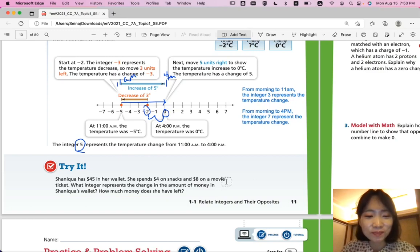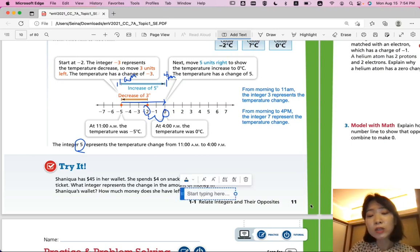Okay, are you ready? So from $45 she spends $4 and $8 on a movie ticket. So what integer represents the change in the amount of money in Shanika's wallet? Total. She spends $4 and $8 so if you add them together you would get the total change and she used it. It means you're subtracting the amount, right? So the integer negative 12 represents the change in the amount of money in Shanika's wallet.